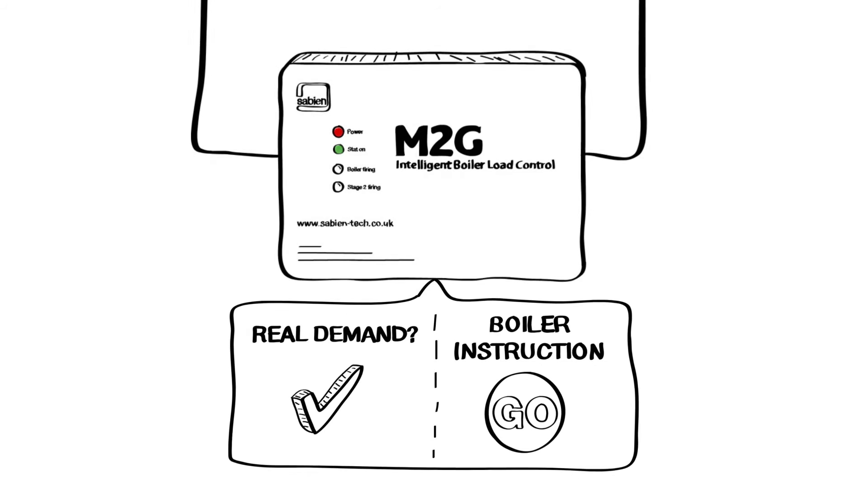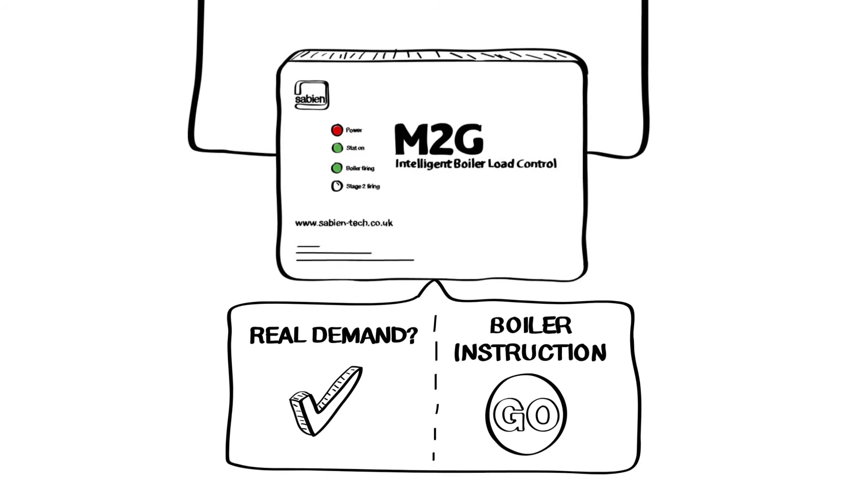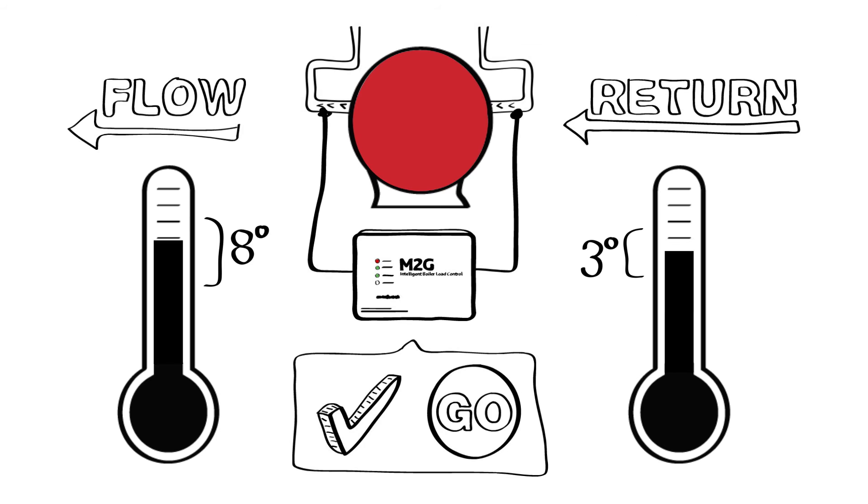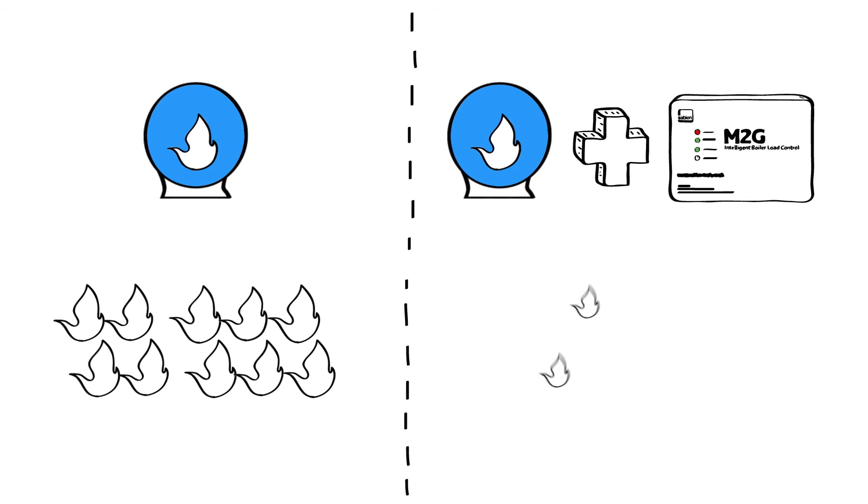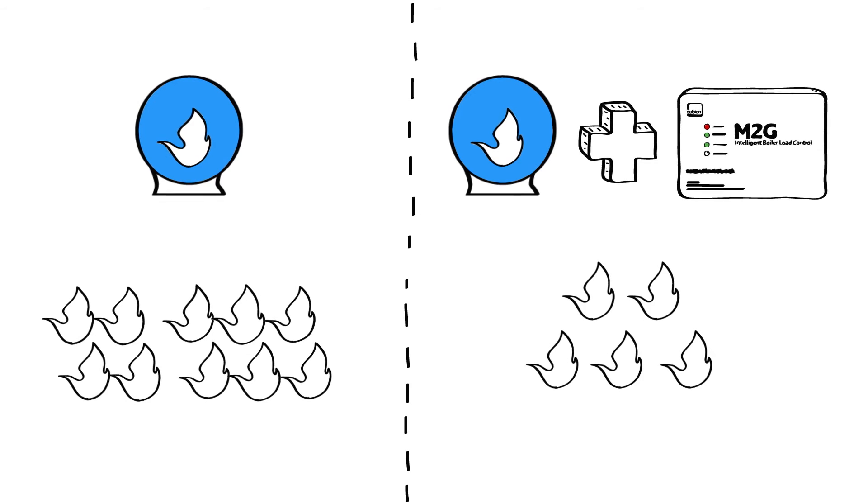M2G identifies whether there is a need for heat or if the boiler is merely dry cycling. Once the boiler does fire up, the process starts again and a new snapshot is taken to measure the flow and return temperatures for the M2G to base its actions on.